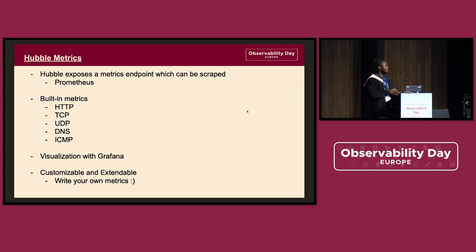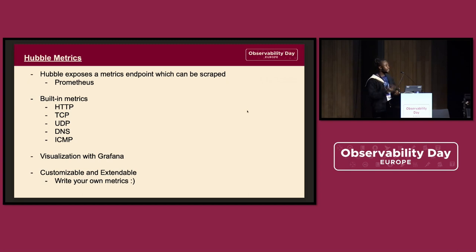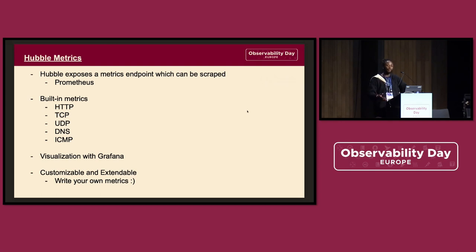For Hubble Metrics, it basically exposes a metric endpoint which can be scraped — for example by Prometheus. It also has certain built-in metrics like HTTP, TCP, UDP, DNS, and ICMP. Another good thing about Hubble is that you can write your own custom metrics — it's customizable and extendable. So if you have certain things you want to filter based on, you can write your own metrics. And you can visualize this data from Hubble Metrics with Grafana.